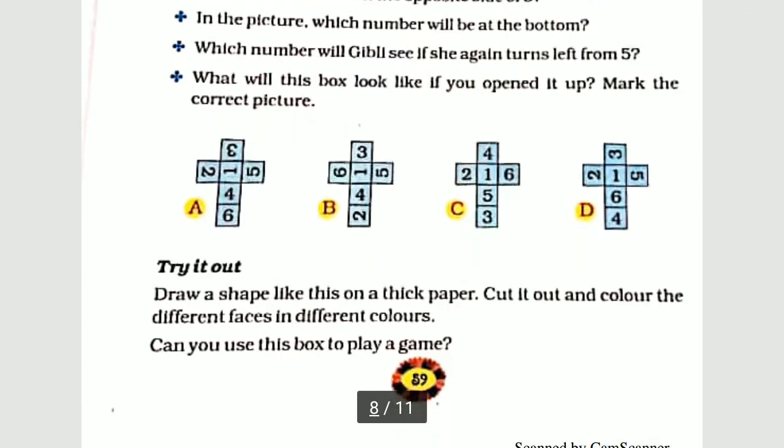Try it out: draw a shape like this on thick paper, cut it out, and color the different faces in different colors. Make a box, color each face, and then write numbers on it so you can use this box to play a game. Here we have completed chapter number 5. Thank you!